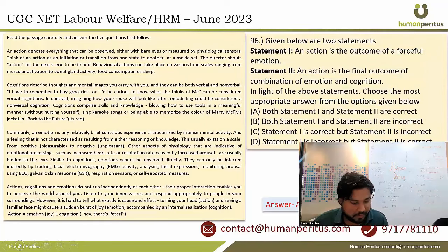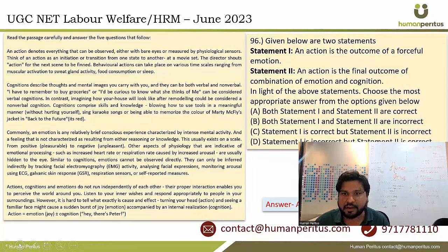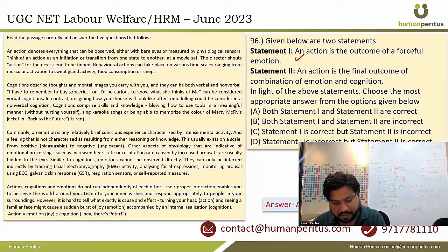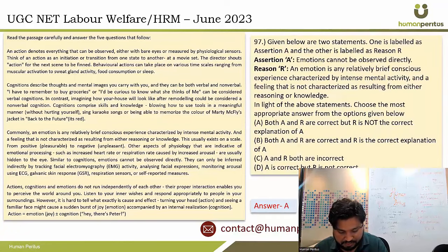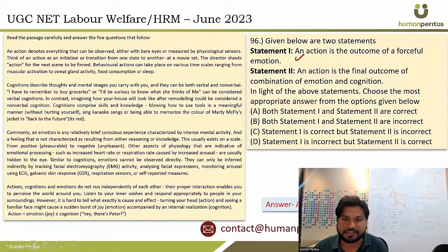In the comprehension section, the passage explains the relationship between action, cognition, and emotions, and the role they play in perceiving reality. The first statement — 'an action is the outcome of forceful emotion' — we believe is not correct, but UGC has marked option A as the correct answer. We believe the correct answer should be that statement one is incorrect and statement two is correct. Statement two — 'action is the final outcome of a combination of emotion and cognition' — is unambiguous.